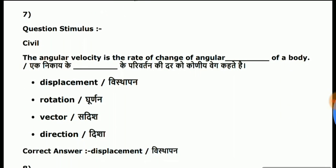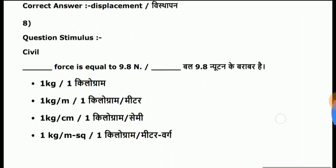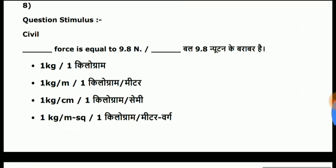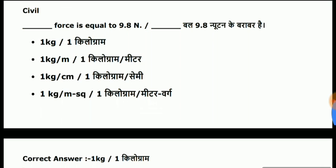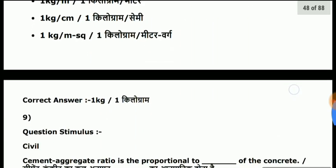The angular velocity is the rate of change of angular displacement. Obviously, the answer is displacement. Question eight: force is equal to 9.8 Newton. Answer is 1 kg. That is, 1 kg force is equal to 9.8 Newton.